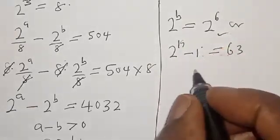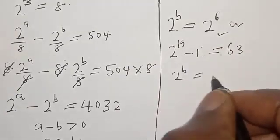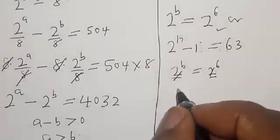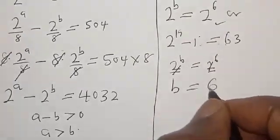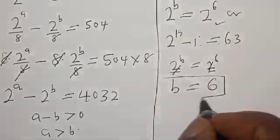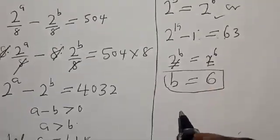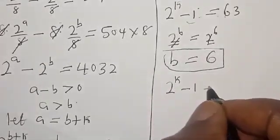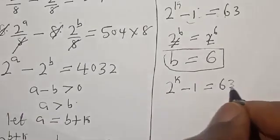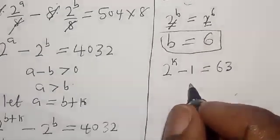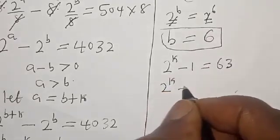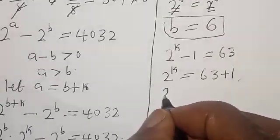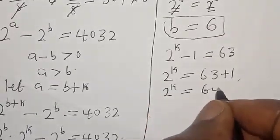We have 2 raised to power b equal to 2 raised to power 3, and 2 raised to power k minus 1 equal to 5. From the first comparison, 2 raised to power b equal to 2 raised to power 3 — we have the same base, so b equals 3. From the second, 2 raised to power k minus 1 equal to 5, therefore 2 raised to power k equal to 6.